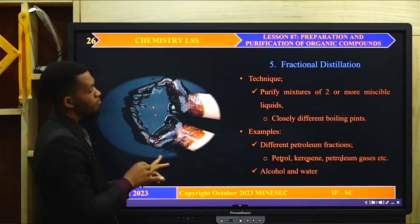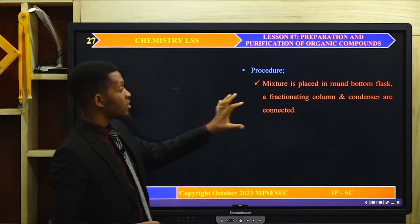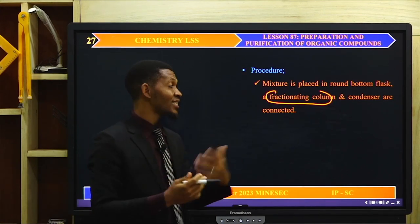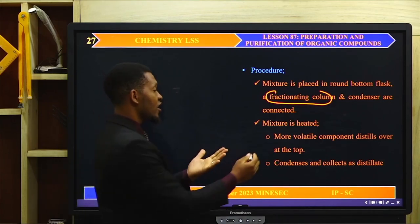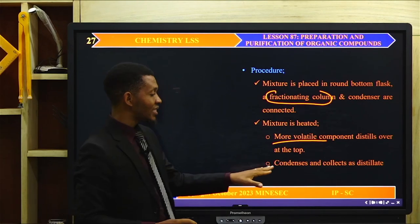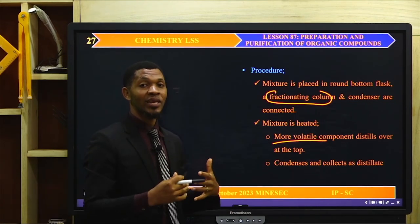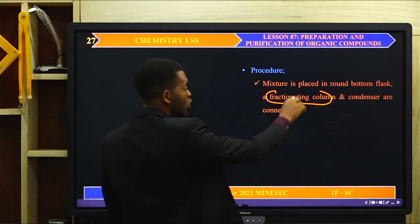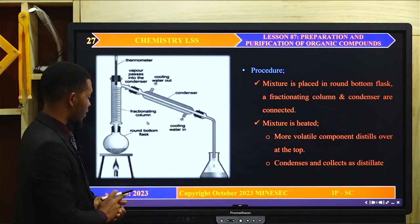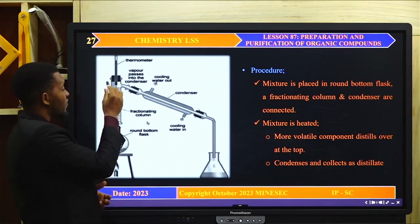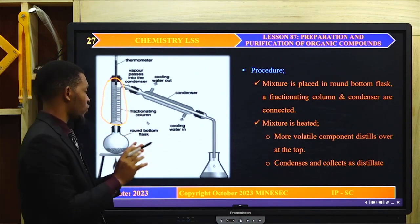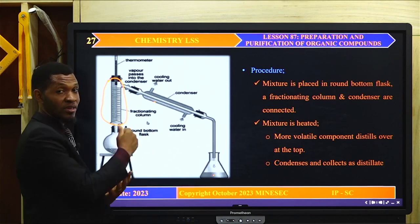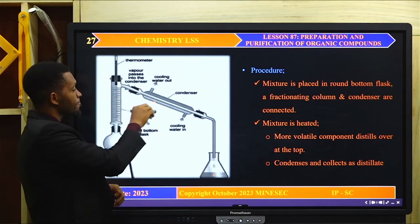To carry out fractional distillation, we also need a fractionating column. The liquid is placed in a round-bottom flask; a fractionating column and a condenser are connected to it. Upon heating, the more volatile component will vaporize and rise to the top of the column, condense, and be collected as the distillate, leaving the less volatile component in the flask. The less volatile components will subsequently vaporize at higher temperatures and be collected separately. The fractionating column helps separate the components based on their boiling points.